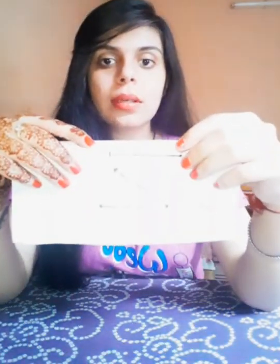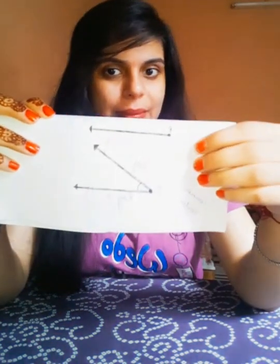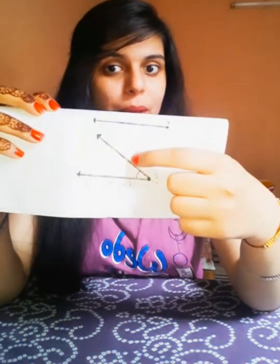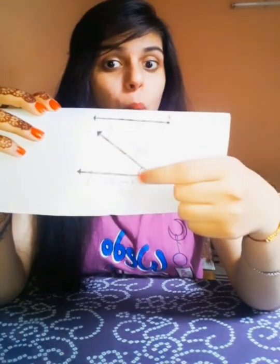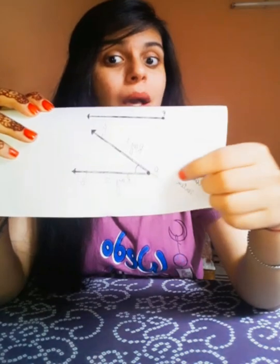So here I have recalled your previous knowledge from the previous chapter — line, line segment, and a ray. Now I'm moving to our main topic. In plane geometry, an angle is the figure formed by two rays called the sides of the angle, and they share one common end point which is known as the vertex of the angle.